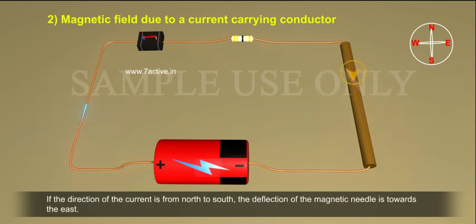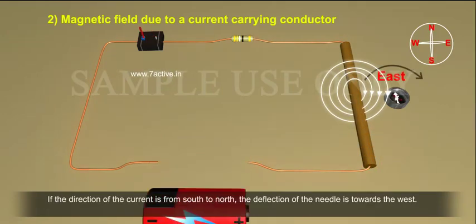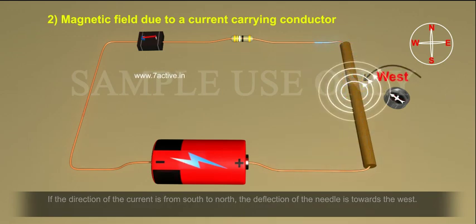If the direction of the current is from north to south, the deflection of the magnetic needle is towards the east. If the direction of the current is from south to north, the deflection of the needle is towards the west.